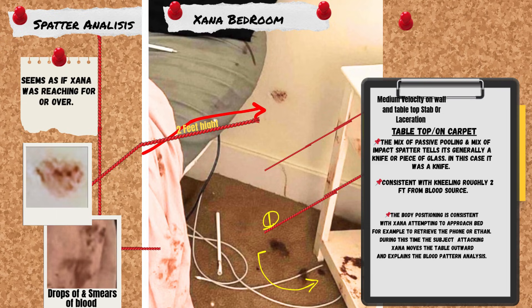Most likely a laceration or stab wound, medium velocity mechanism. The mix of passive pooling and impact spatter aligns with a sharp-edged or pointed implement — for example, a knife or broken glass — penetrating soft tissue, causing initial spurting followed by dripping. Torso or upper thigh based on stain heights of 1 to 3 feet. A single deep laceration of 4 to 6 inches could produce this volume without cast-off. Alternative: blunt force trauma, e.g. repeated strikes with a heavy object, but less likely due to lack of linear cast-off trails.